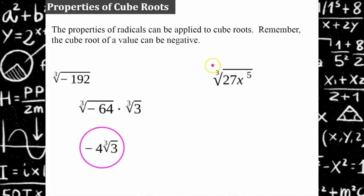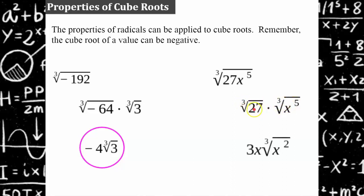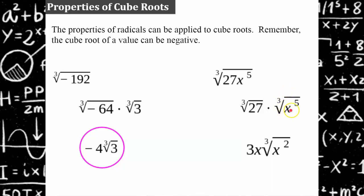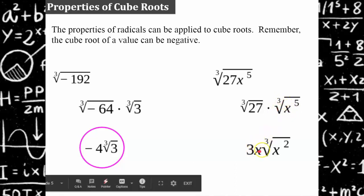Let's try another one. Cube root of 27x to the fifth. So I have the cube root of 27 times the cube root of x to the fifth. The cube root of 27 is 3. The cube root of x to the fifth is x cubed times x squared. The cube root of x cubed is x, leaving x squared as the radicand. So in simplest form, it's 3x cube root of x squared.